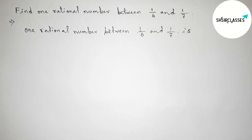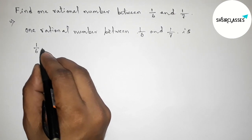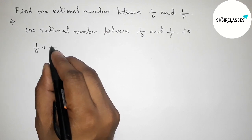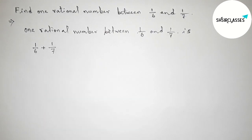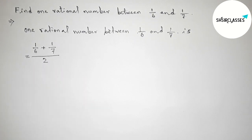Here, total number of rational numbers is 2: 1/6 and 1/7. So now applying mean value theorem, adding these two rational numbers and dividing by 2, because here total number of rational numbers is 2.